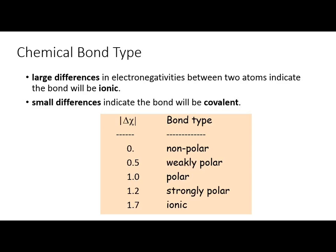The example we looked at was water. If you calculate the electronegativity difference for a water molecule, it's not 1.7. Oxygen definitely has a higher electronegativity value than hydrogen, so oxygen runs around with a partial negative charge — not entirely negative. We use a lowercase delta (δ) to denote partially negative and partially positive.